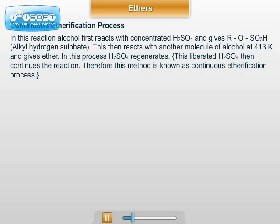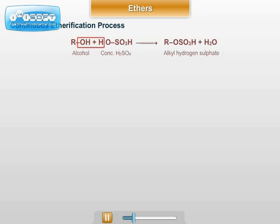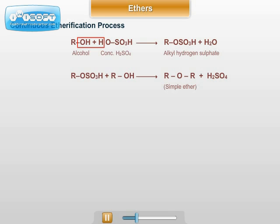The main drawback of this continuous etherification process is that only simple ethers are obtained. The general reaction is: ROH (alcohol) plus HOSO3H (concentrated H2SO4) first forms alkyl hydrogen sulphate. In the second step, alkyl hydrogen sulphate reacts with another molecule of alcohol, forming H2SO4 and simple ether. The liberated H2SO4 then continues the process.